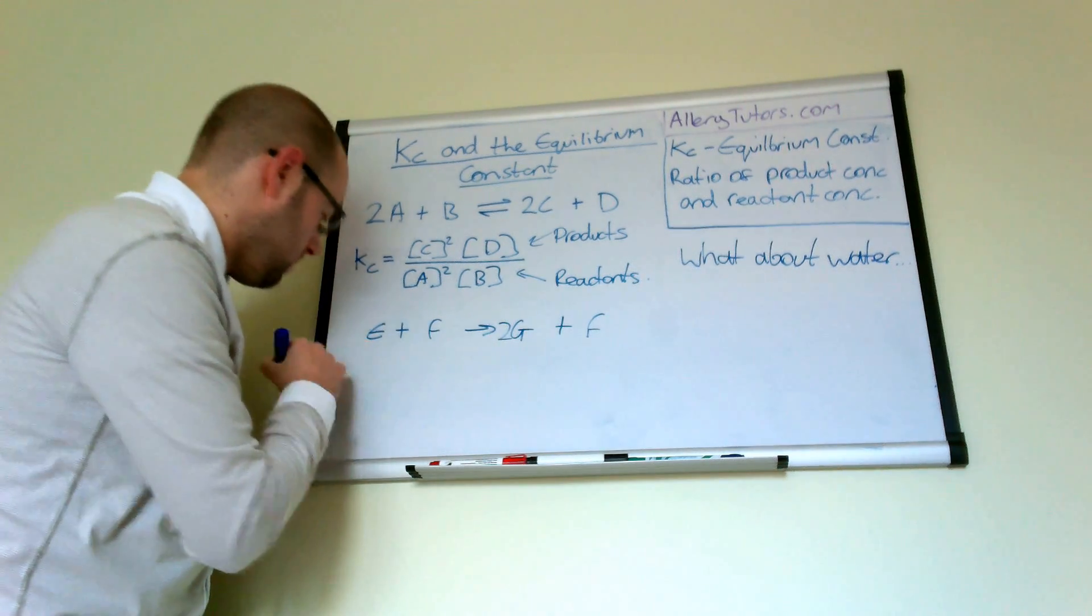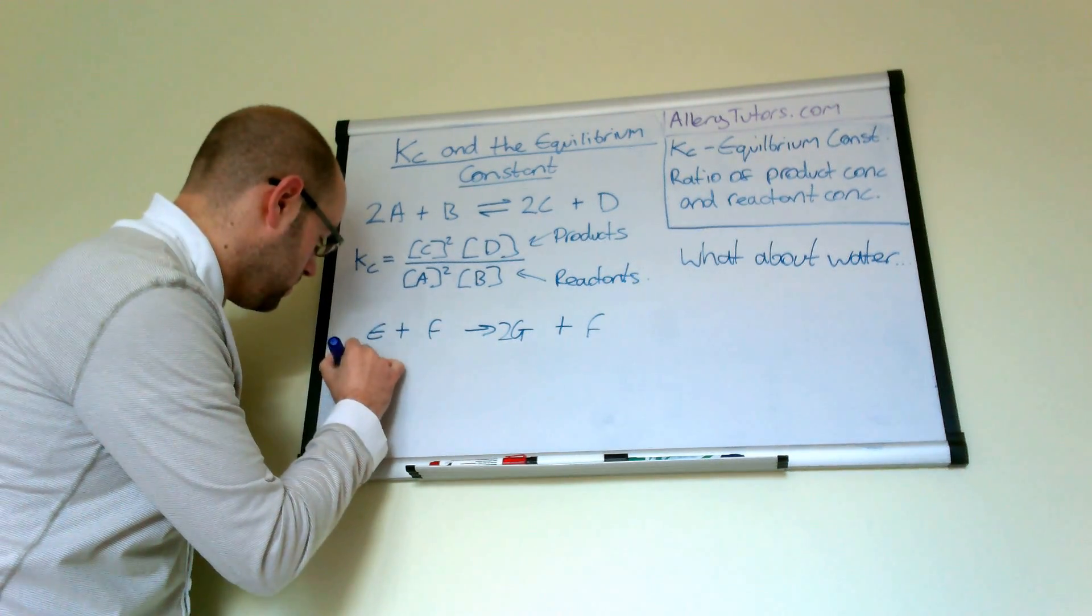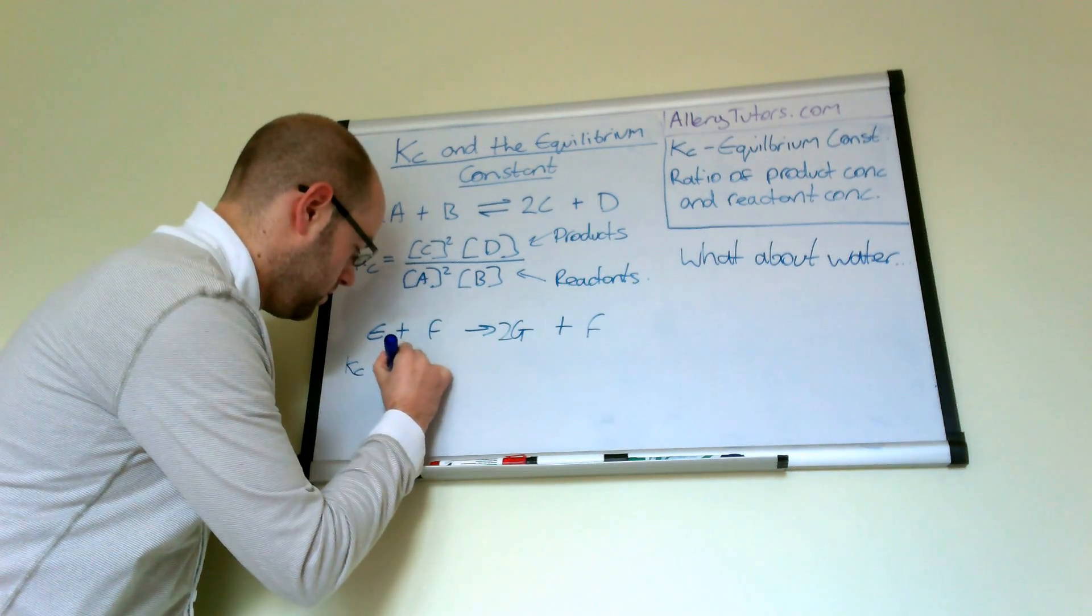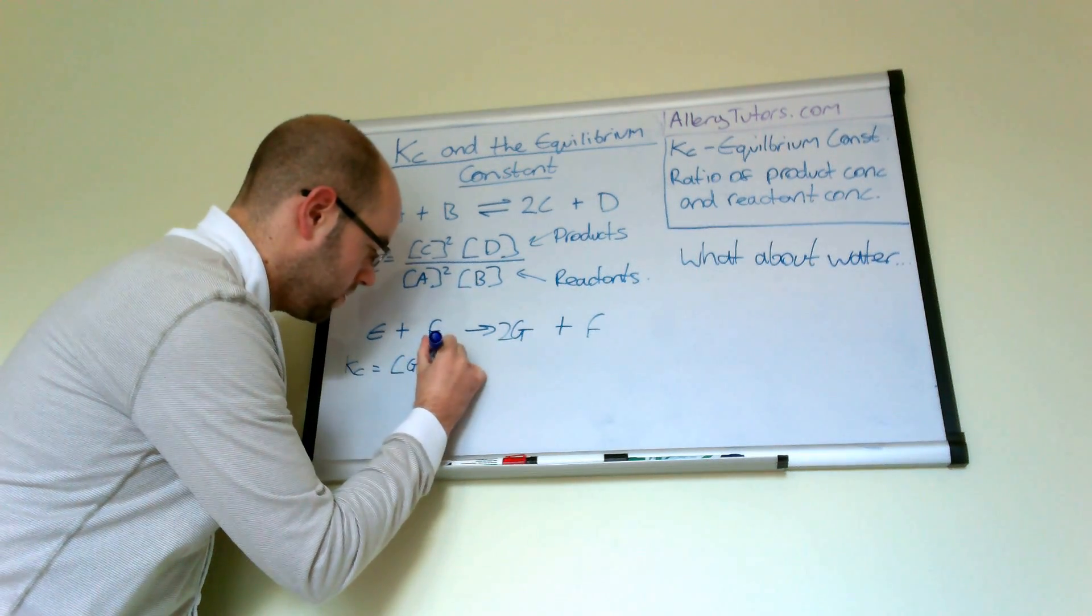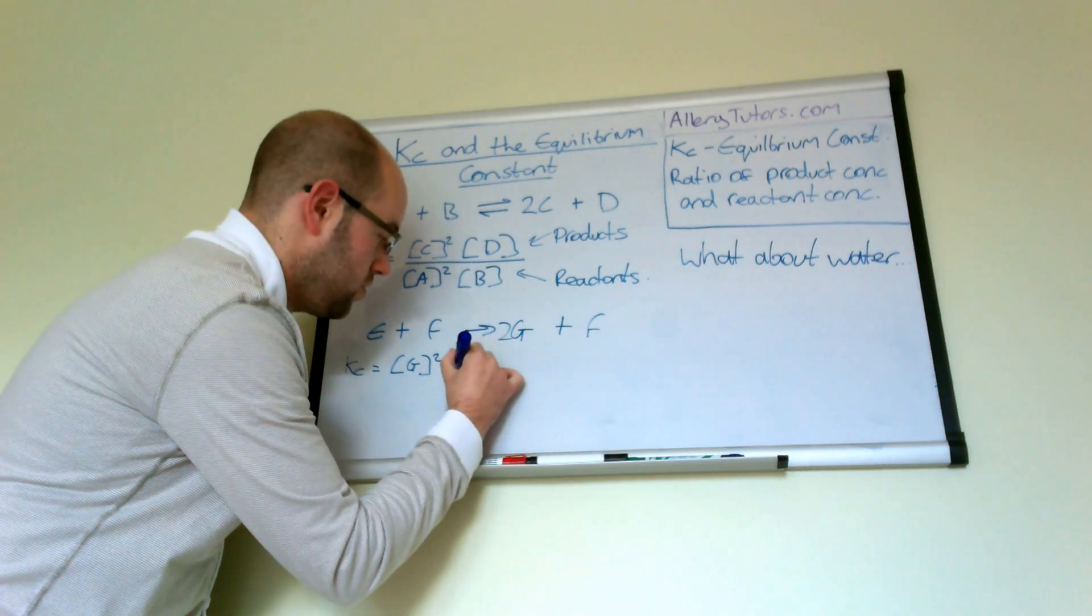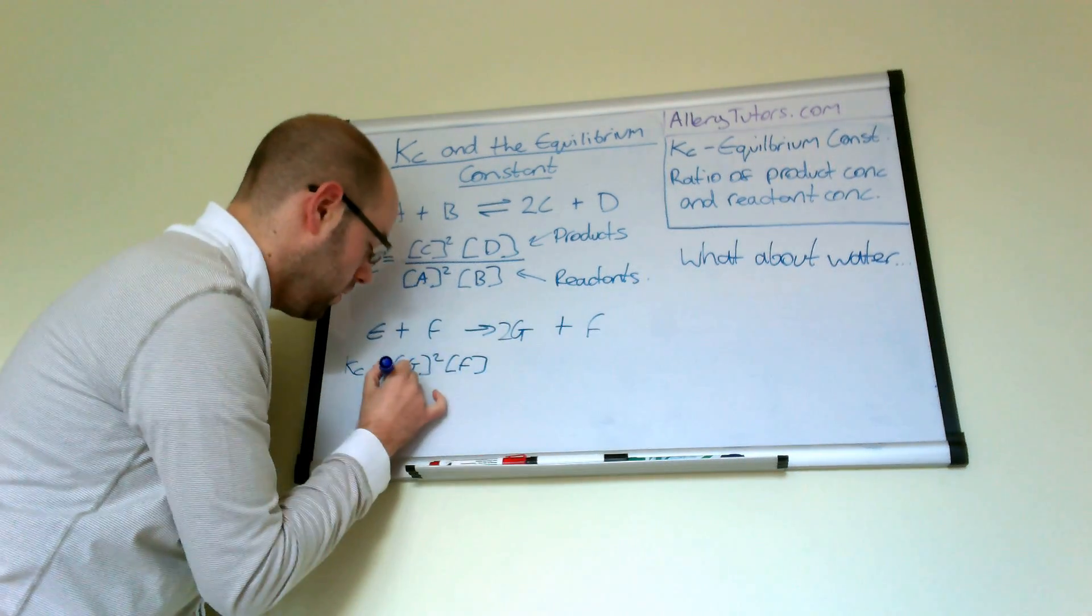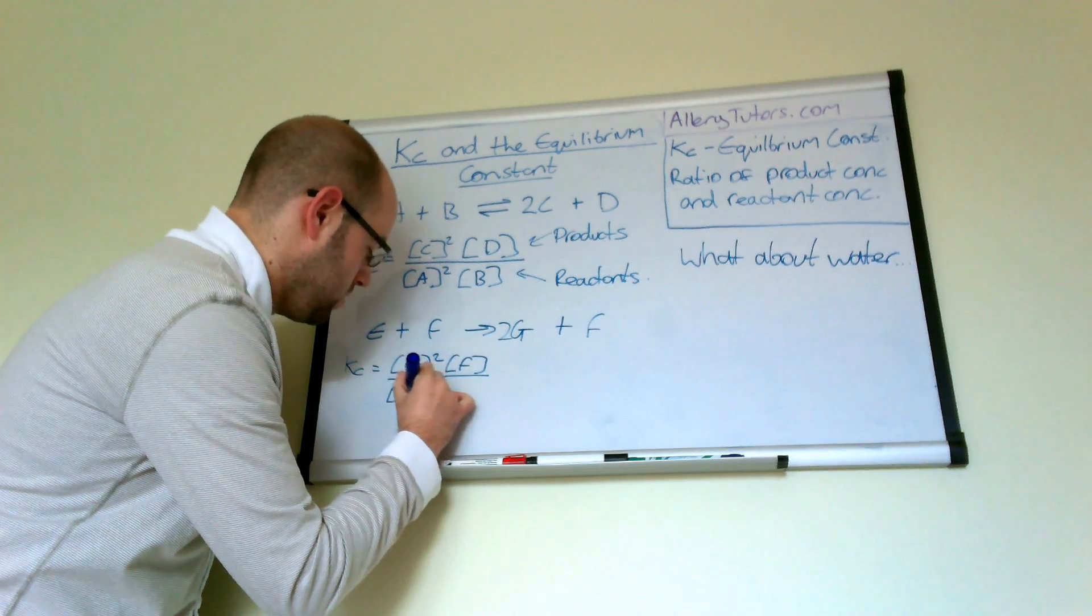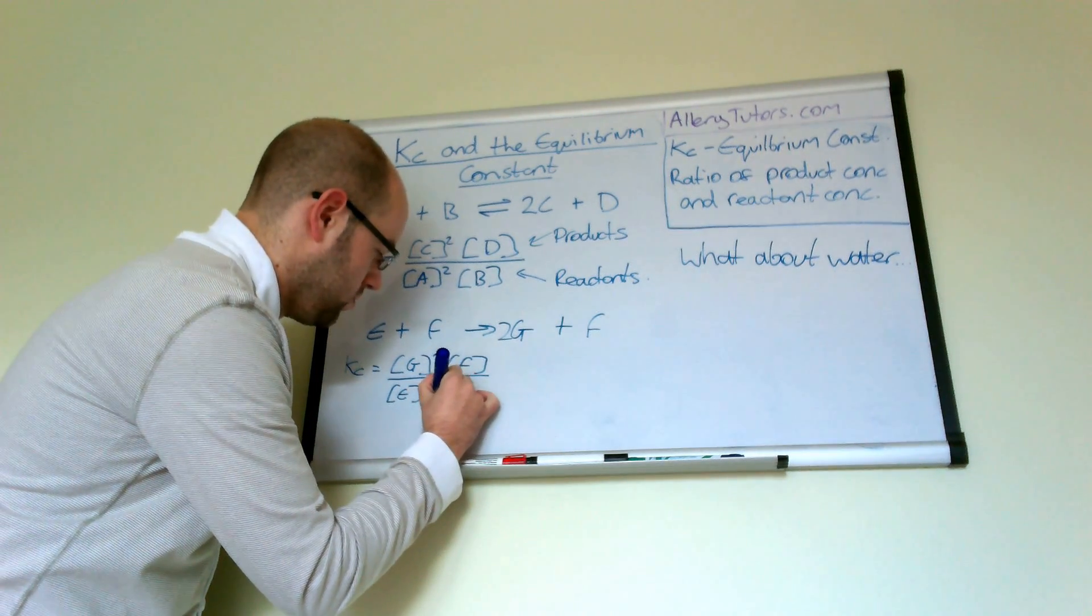So we're going to write it again. So here's your KC expression. So KC for this equals concentration of G squared multiplied by the concentration of F. That's just one so we don't need to put a power on there divided by the concentration of E times by the concentration of F.